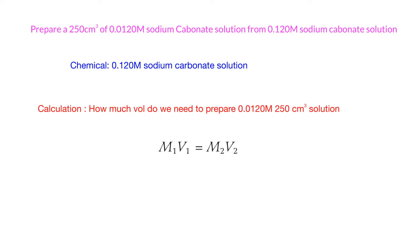Because in this case we are diluting the stock solution into a diluted one, we have to use the equation M1V1 equals M2V2. The final volume of solution is 250 cm³, so this one will be V2, and this is the molarity that we want.